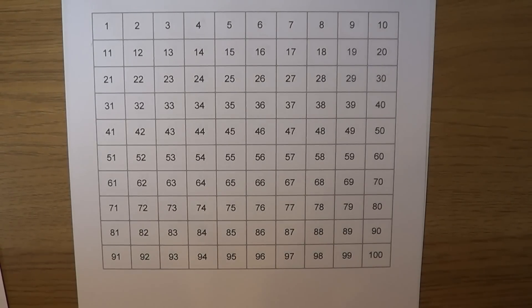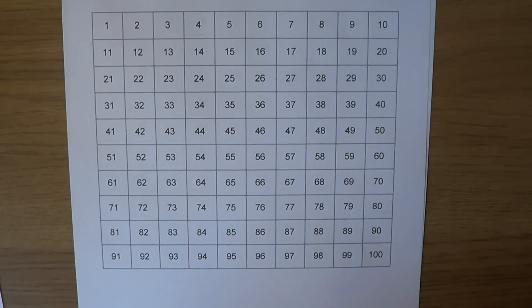A prime number can only be divided by 1 and itself. In other words, it has exactly 2 factors or 2 divisors.